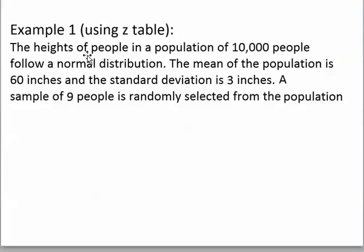This question says that the heights of the people in the population follow a normal distribution, which means that the individuals in the population have a normal distribution. We know that if the population is normal, the sampling distribution is always normal, no matter what sample size is being used.